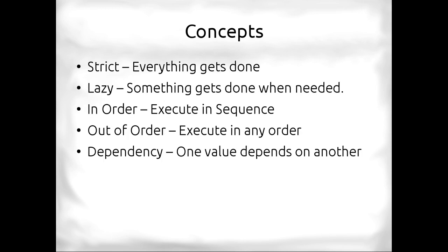Other concepts we use are strictness. Basically, if it's strict, everything gets done and executed. If it's lazy, things only get done or executed when they're needed. If something is executed in order, it's executed in a sequence in sequential order. If it's executed out of order, it means that things can be executed in any order whatsoever. They might not be order dependent. Dependency means that one value depends on another. Oftentimes, this is like a variable that the loop body depends on.